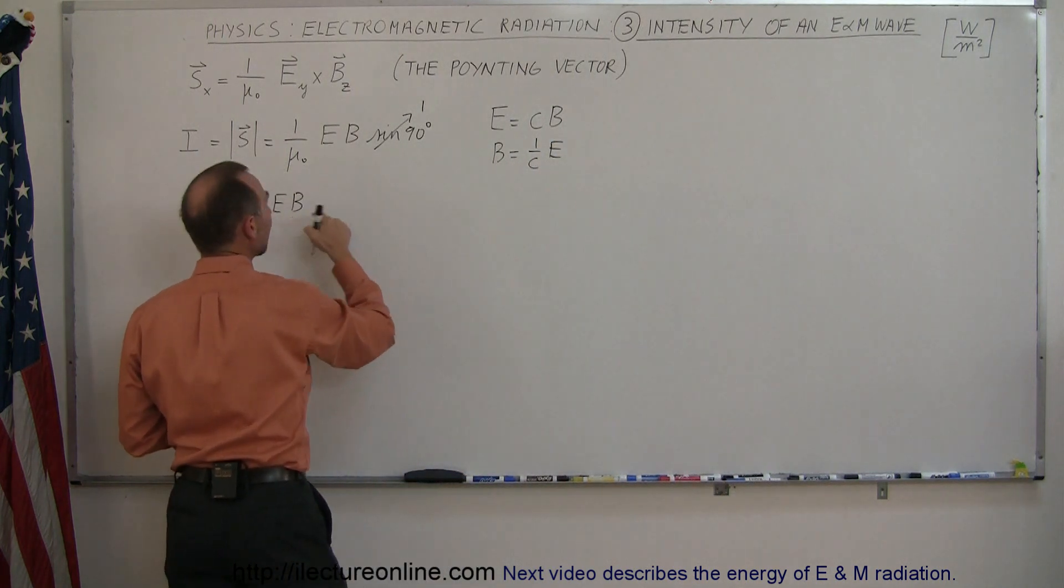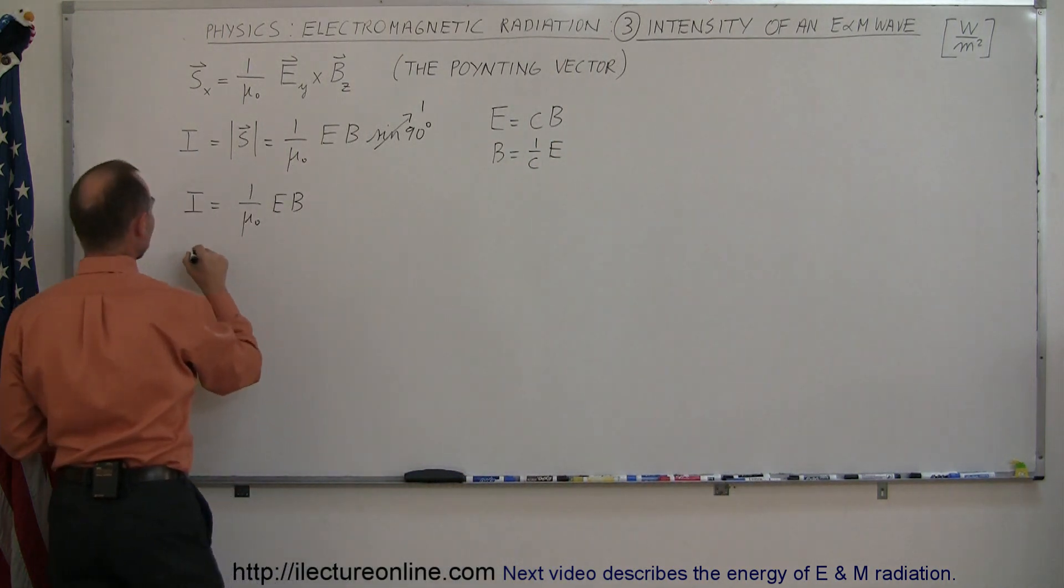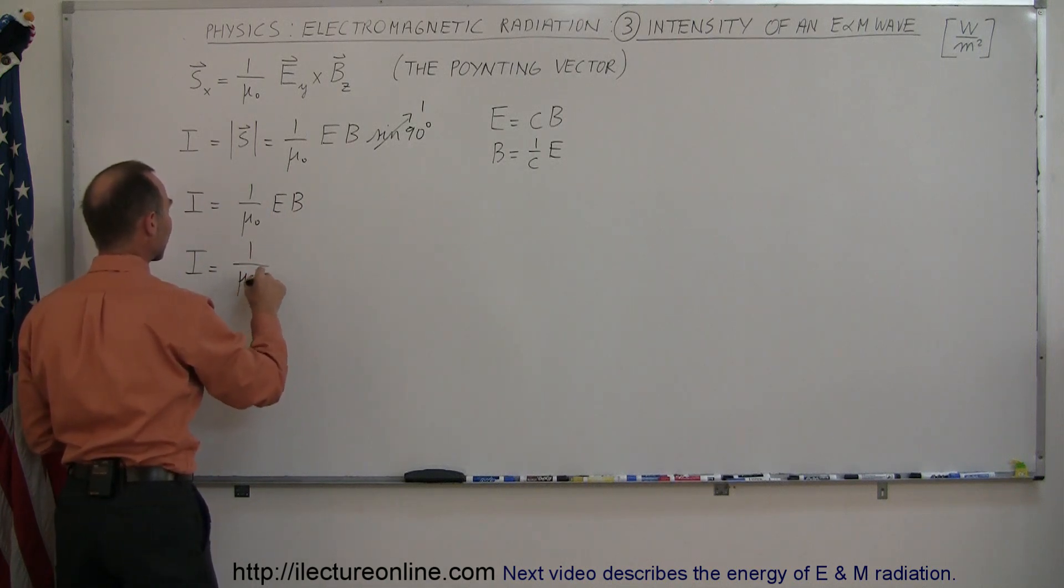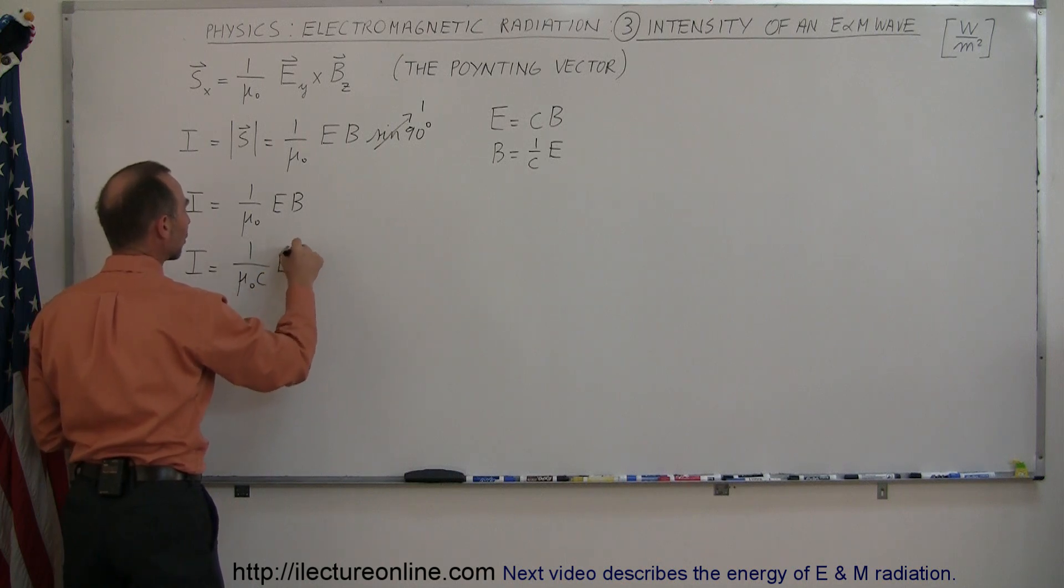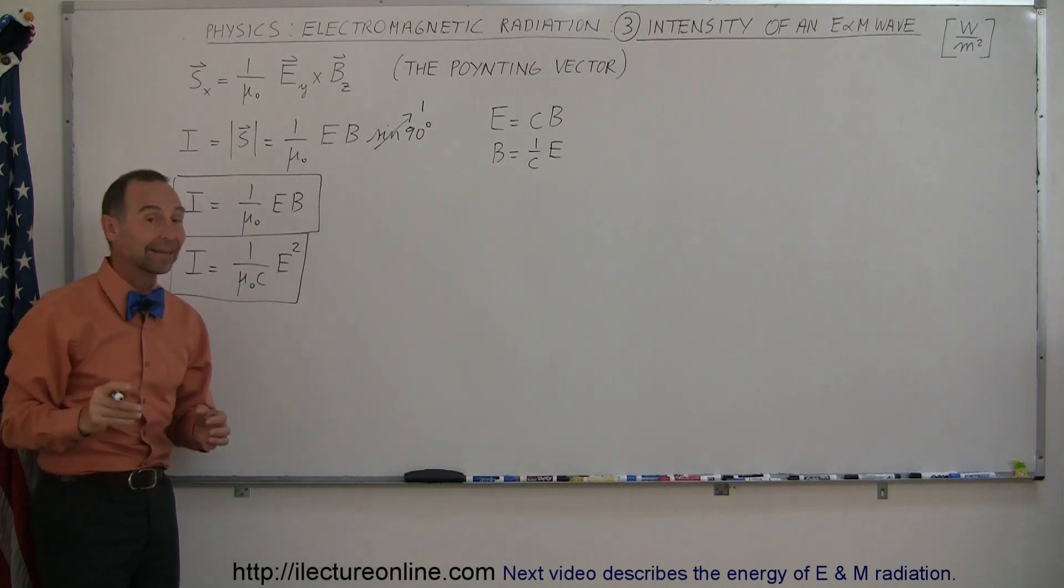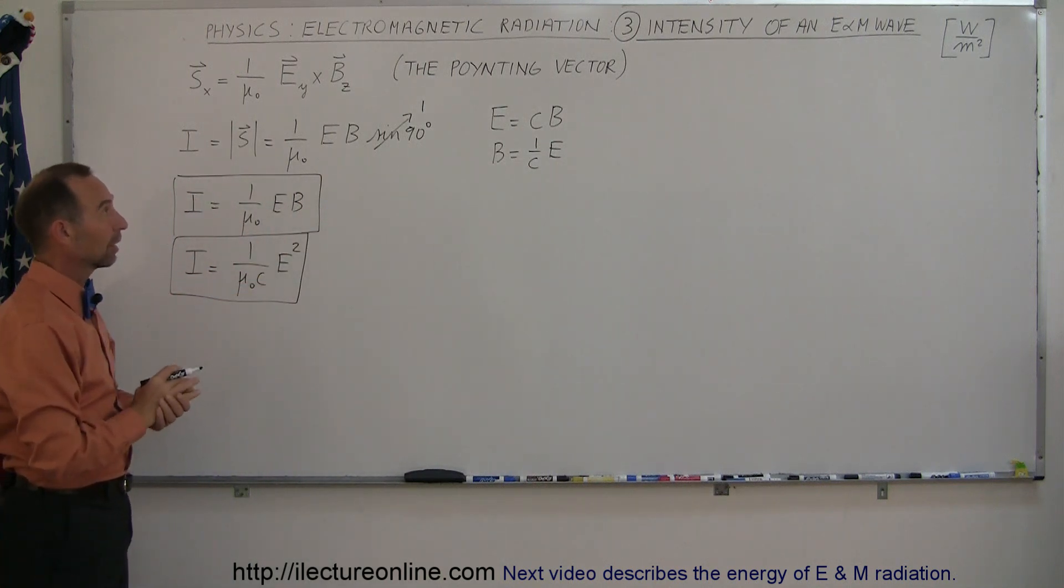If we replace B by 1 over C times E, we can then say that the intensity of electromagnetic radiation can be written as 1 over μ₀C times E times E or E². And this is typically the way in which we'll find the equation describing the intensity of electromagnetic radiation.